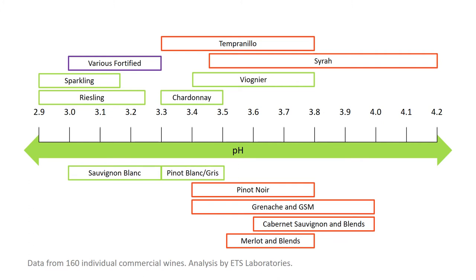Syrah has an incredibly wide pH window, going from under 3.5 to over 4.2. Those over-4.2 wines are definitely from Walla Walla, where a style of viticulture promotes excess potassium in the fruit, which spikes the pH. The lower pH examples were from the Northern Rhône — St. Joseph and Côte Rôtie. This wide window reflects the wide range of climates Syrah is now grown in globally. It was surprising that Syrah's range was wider than Cabernet, which has been planted more widely.